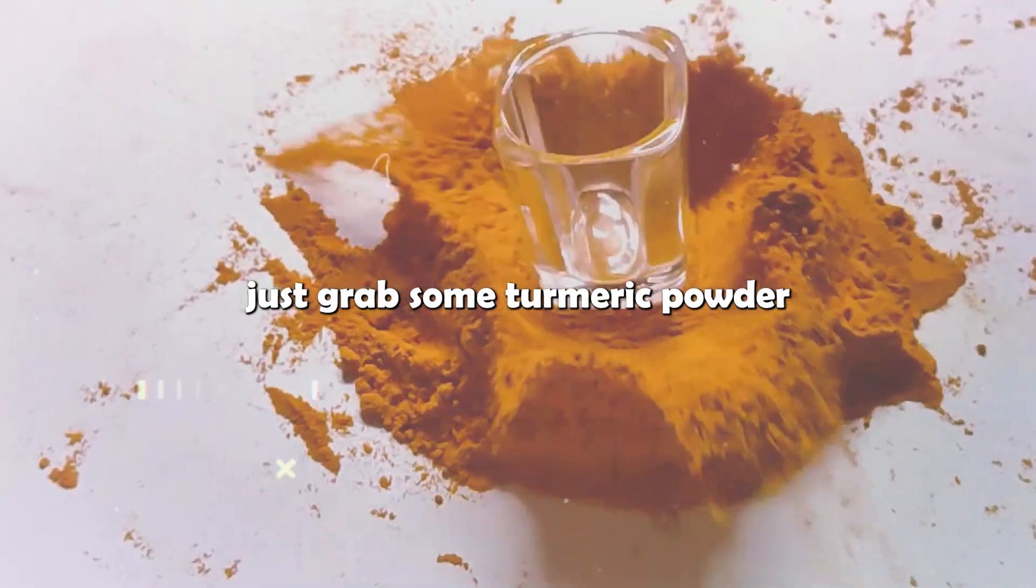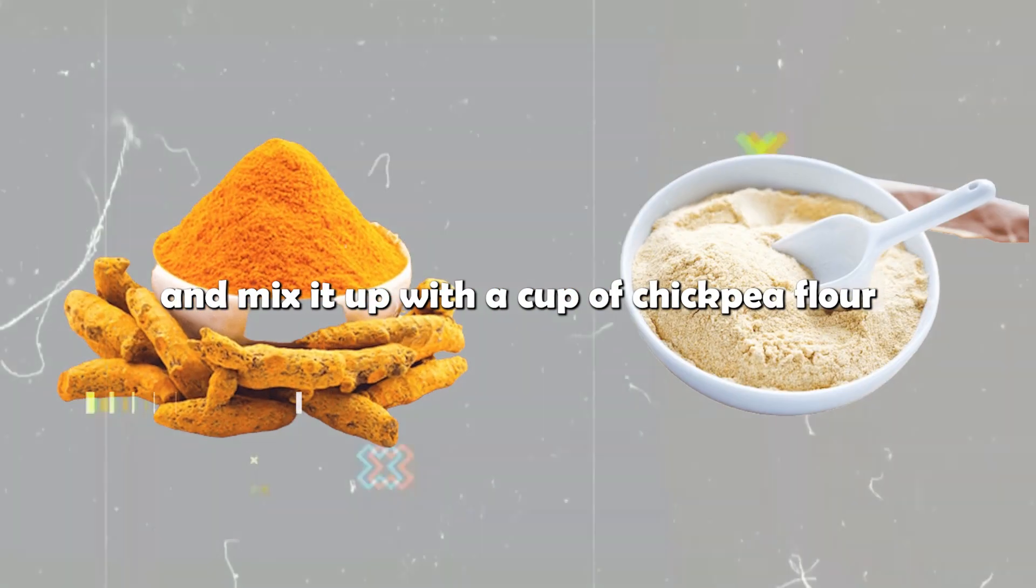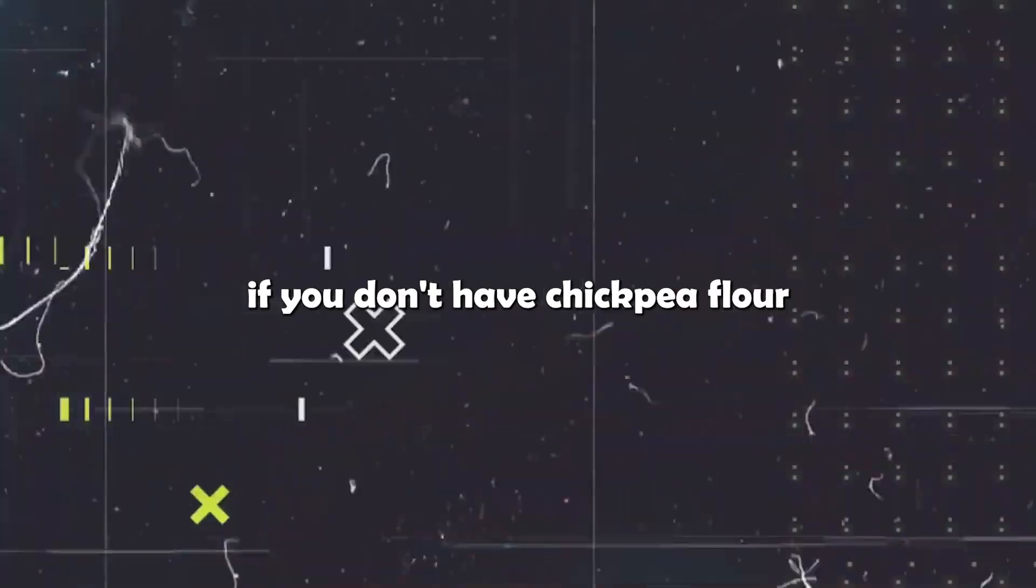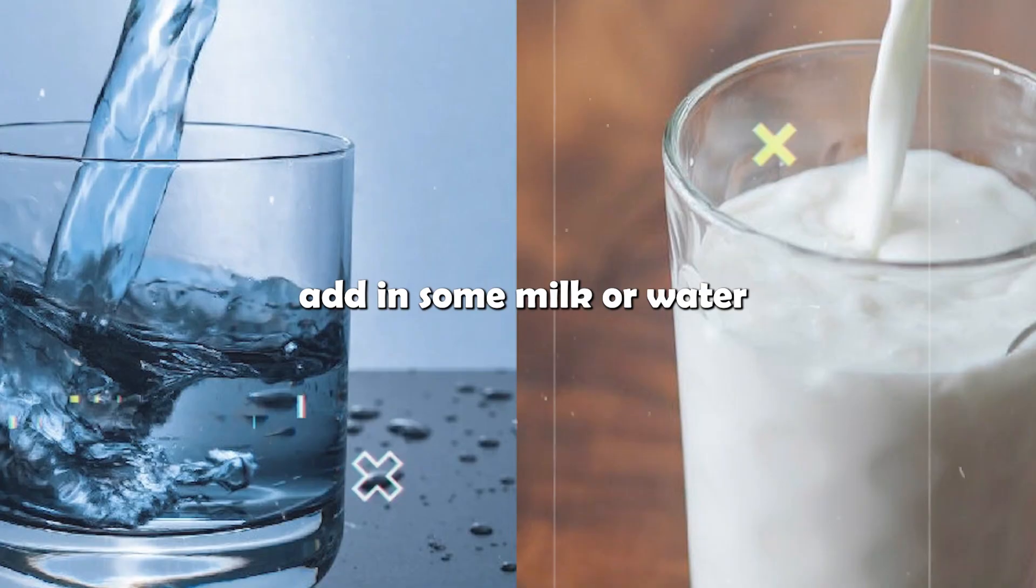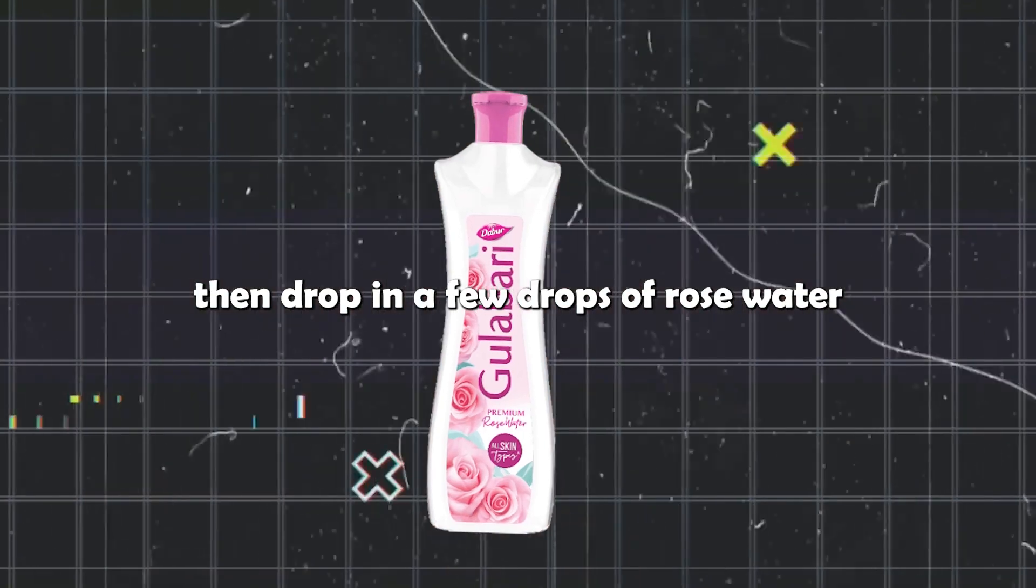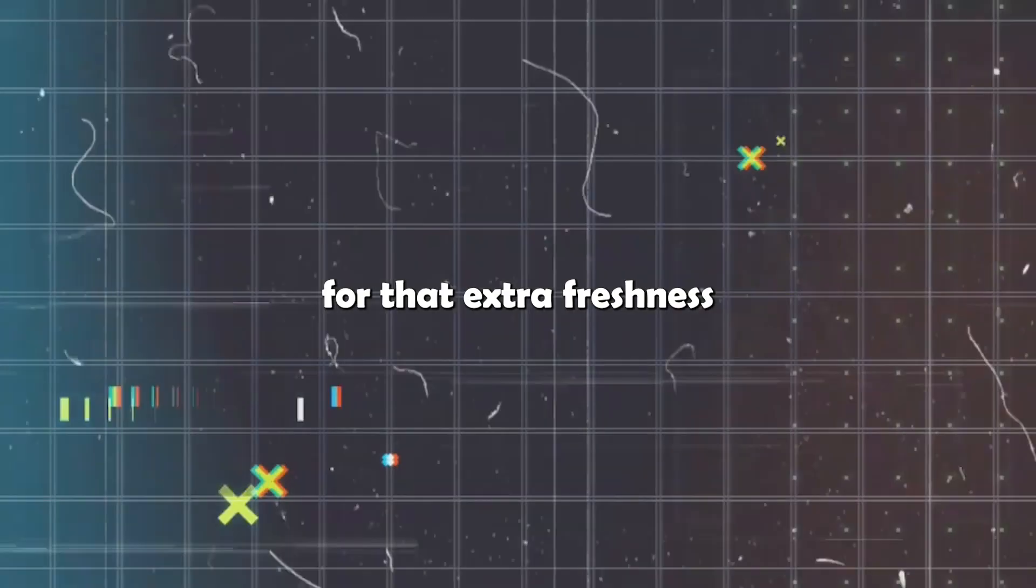Just grab some turmeric powder, about half a teaspoon, and mix it up with a cup of chickpea flour. If you don't have chickpea flour, regular flour works just fine. Add in some milk or water, enough to make a smooth paste. Then drop in a few drops of rose water for that extra freshness.